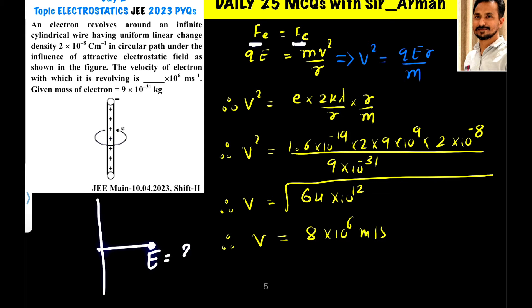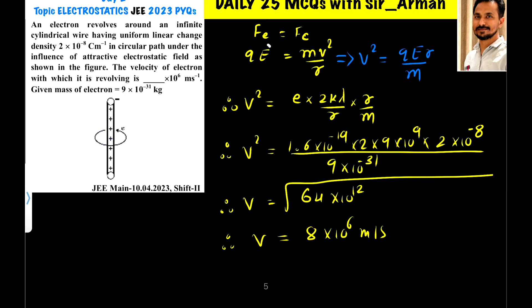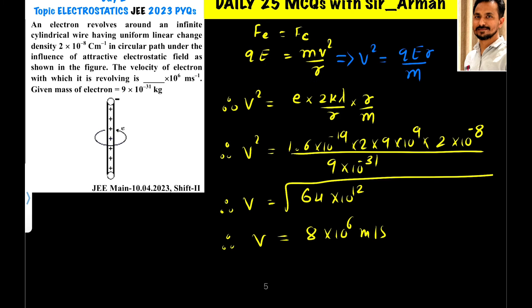The wire generates an electric field E given by 2kλ/r. The force on the electron due to the wire is charge of electron times the electric field, so qE = mv²/r. We want velocity, so we make v the subject: v² = qEr/m.